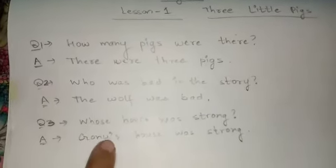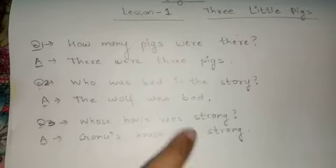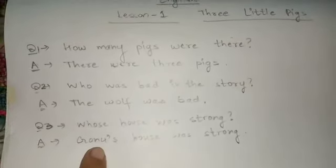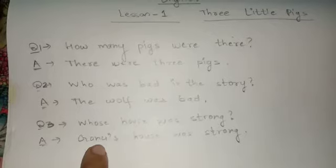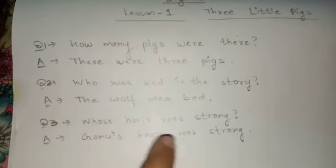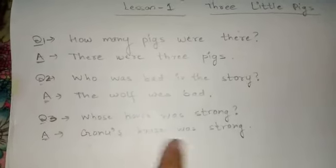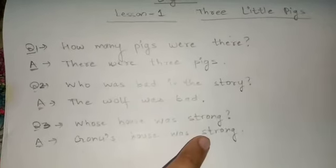So, the answer will be, Gonu's house was strong. Gonu was the 3rd pig, whose house was made up of bricks and cement. Hence, his house was strong. Gonu's house was strong, ok student?